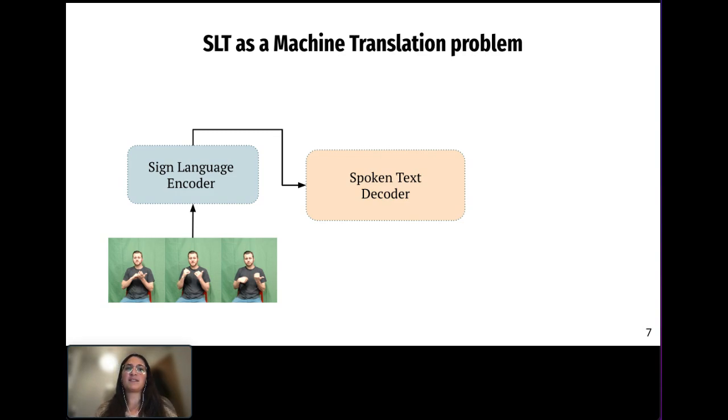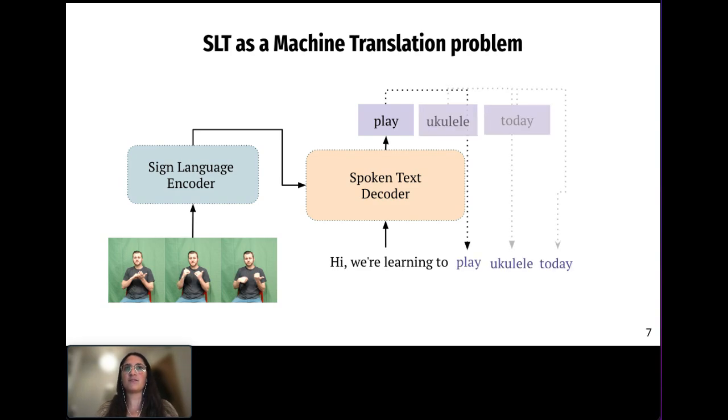We can pose sign language translation as a machine translation problem. This means that it's a sequence-to-sequence pipeline where instead of having spoken language at the input, we have a visual language. Similar to machine translation algorithms, what we want to have is an autoregressive decoder that is able to predict text conditioned on visuals.